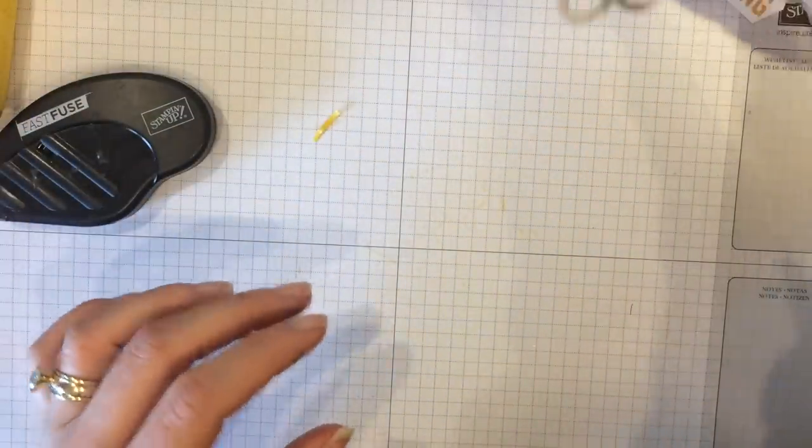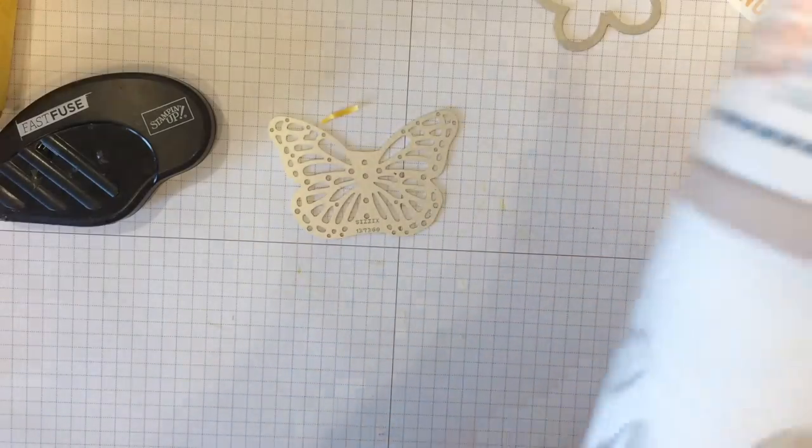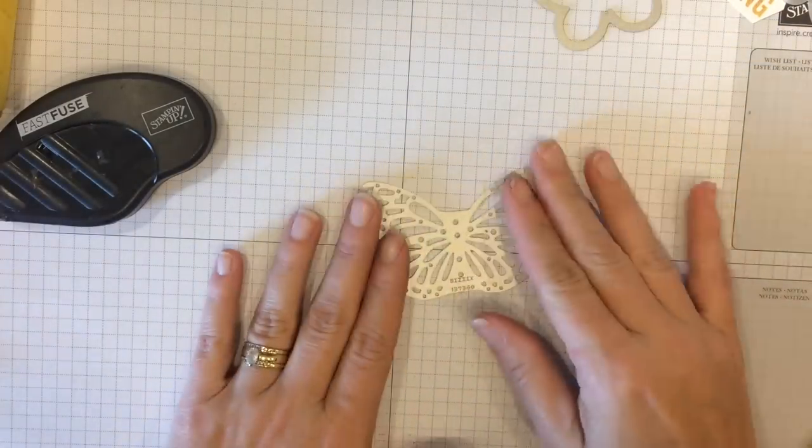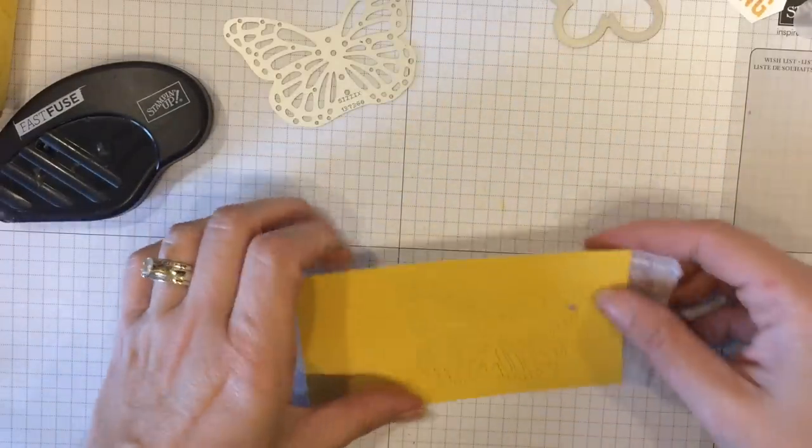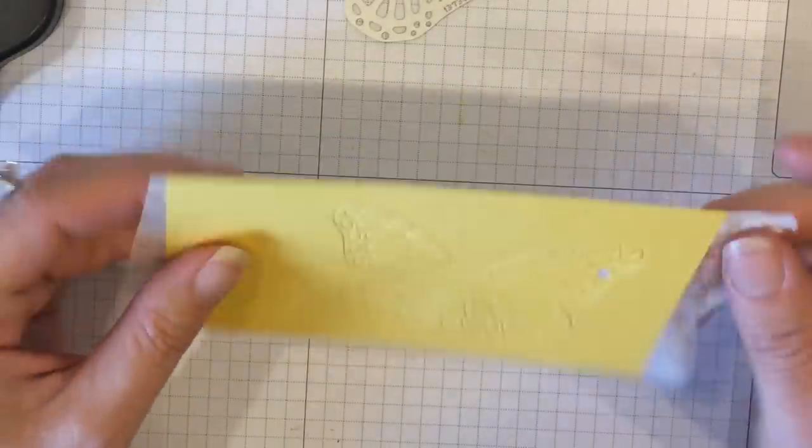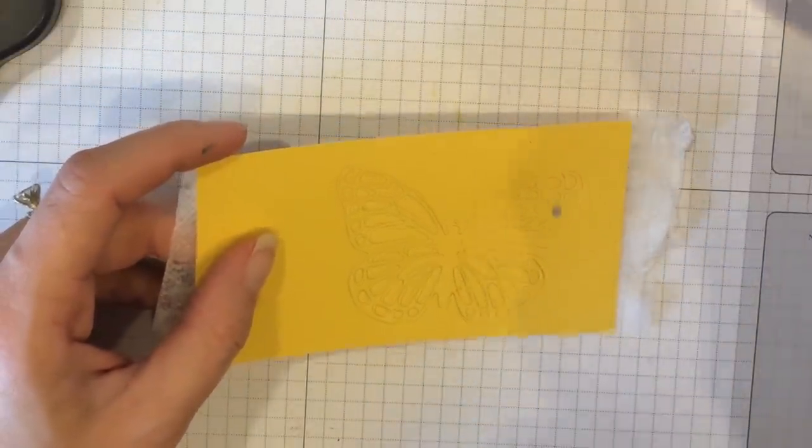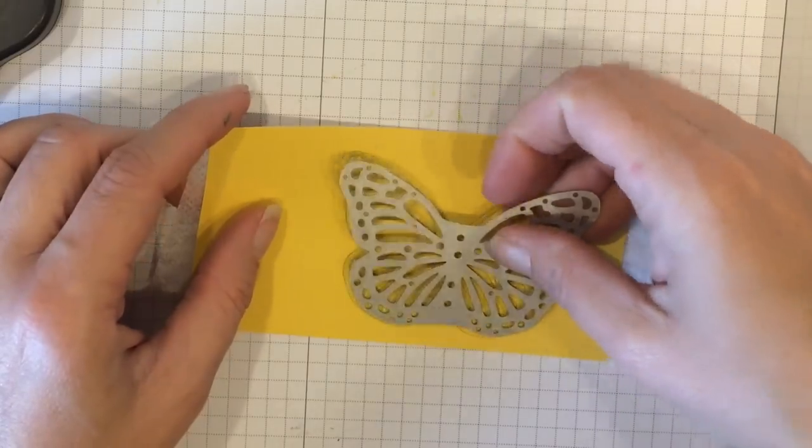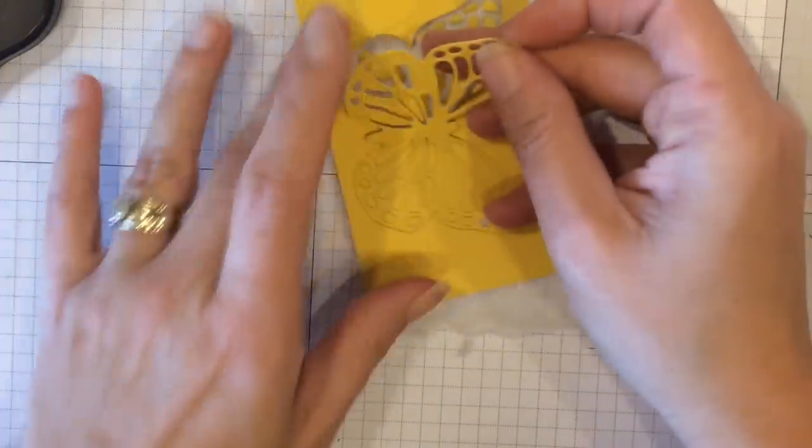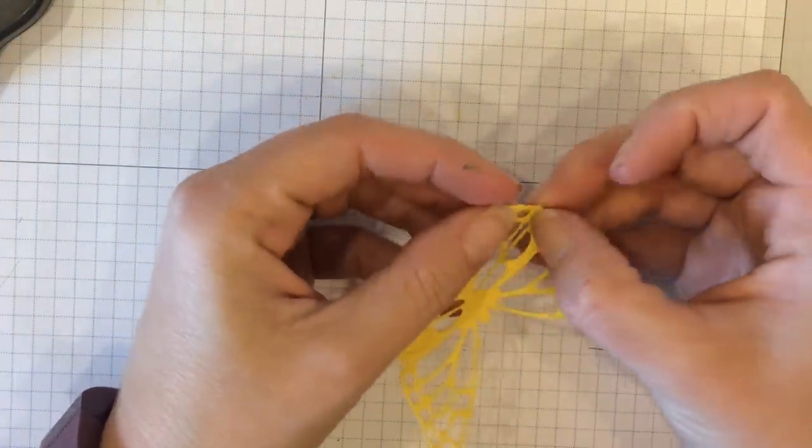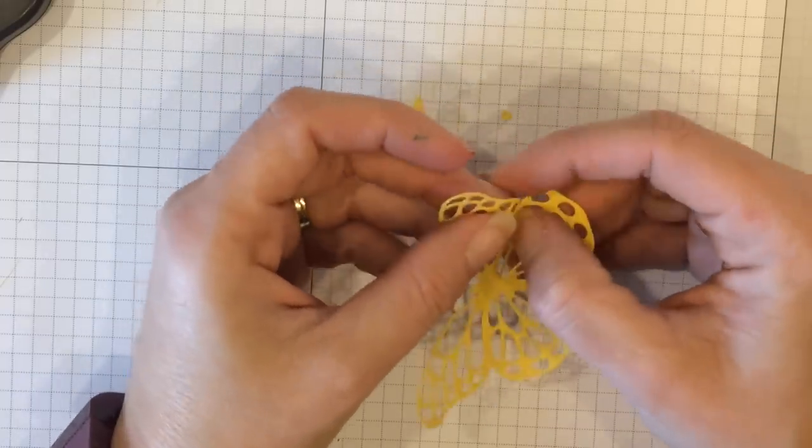Alright, so now we've got the box. Now we need to cut out this butterfly. And these are in the occasions catalog page 26 and they come in a bundle with a stamp set. So make sure you look at the bundle price. It saves you some money. And if you haven't seen already, the best way to cut out these intricate framelits is to lay down a dryer sheet on your Big Shot platform. Then your cardstock. And lay your die or your framelit on top. Run it through. And then when you peel this off, all of those little dots stay there. So you don't have to punch them all out. There are a few that might stick, but they come out really easily. That dryer sheet has been a lifesaver.